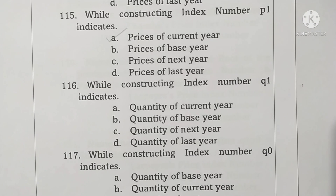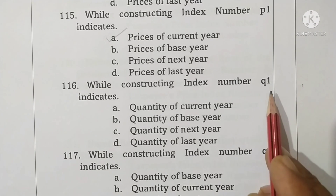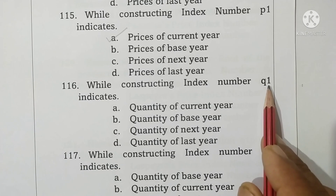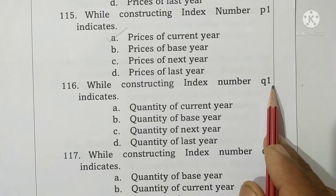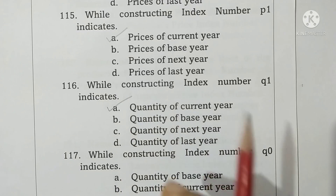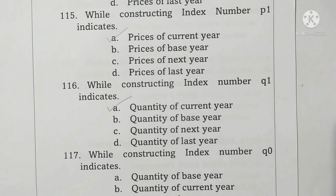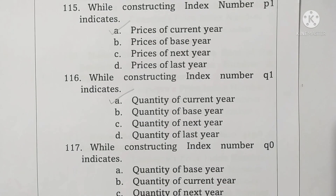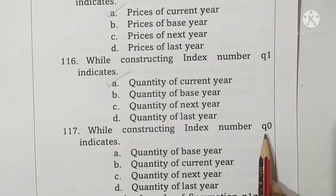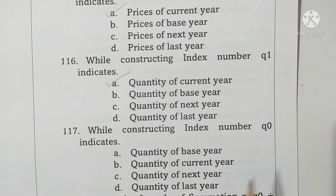Question 117: while constructing an index number, q0 indicates quantity 0, i.e., the quantity of the base year. Option A is correct.